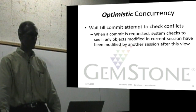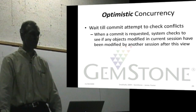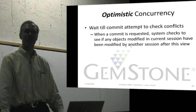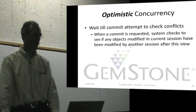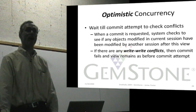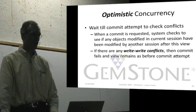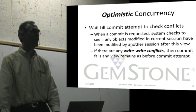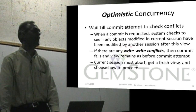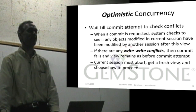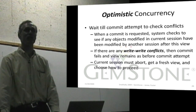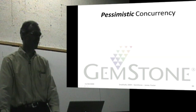When a commit is requested, the system checks to see if any objects modified in the current session have been modified by another session after you started. So if someone has modified an object and then you try to commit a change to that object, if there are any write-write conflicts, then your commit will fail. Your view will remain as it was before the commit, and you need to abort, get a fresh view, and then it's application-dependent whether you retry or ask the user — telling them their changes couldn't be saved because someone else made changes.